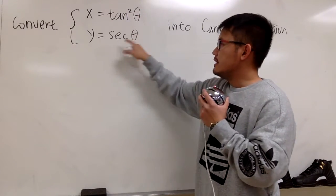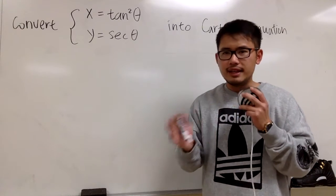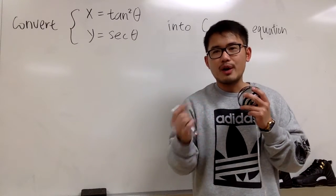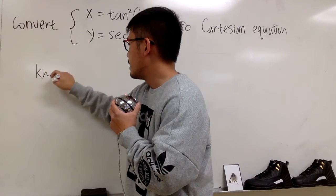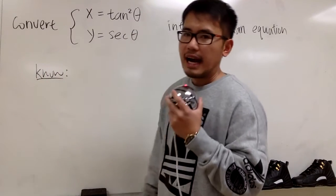Tangent squared theta and secant theta, they kind of are related. Let me show you how we can do that. But we first know the famous trig identity,